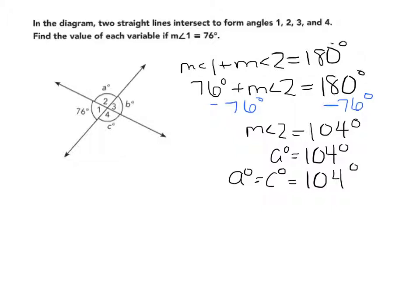We know that angle 1 is a vertical angle to angle 3, so we know that the measure of B has to be 76 degrees.